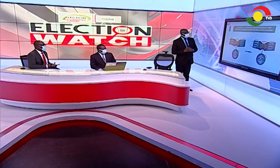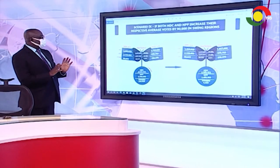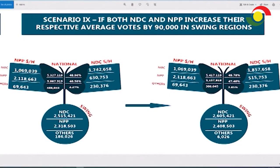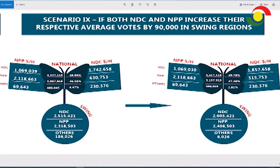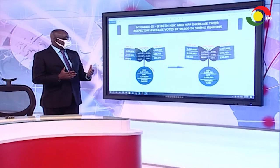Scenario nine: if both NDC and NPP increase their respective average votes by 90,000 in swing regions — NDC amasses about 2.5 million and NPP 2.3 million, with others at 186,000 — splitting 180,000 between the two parties depletes the others to just about 6,000. But again, this does not reflect an outright win for either party and pushes the result to a runoff.